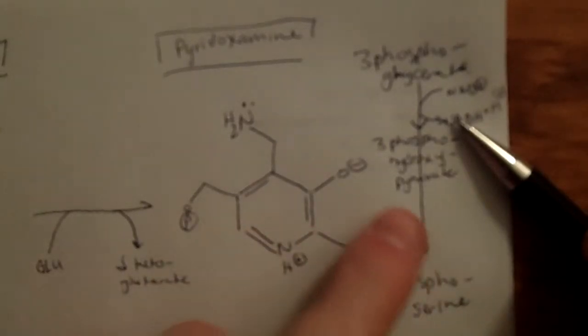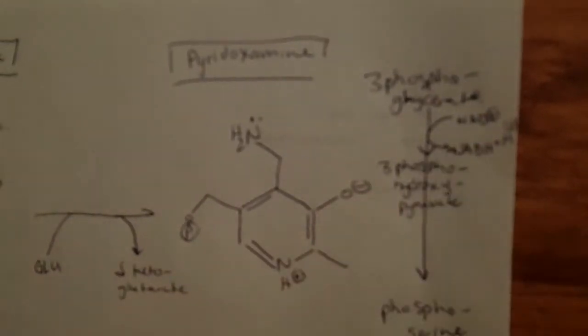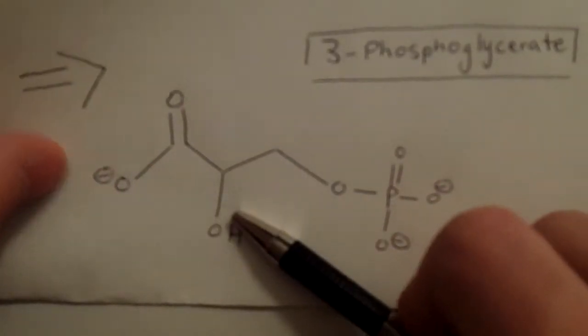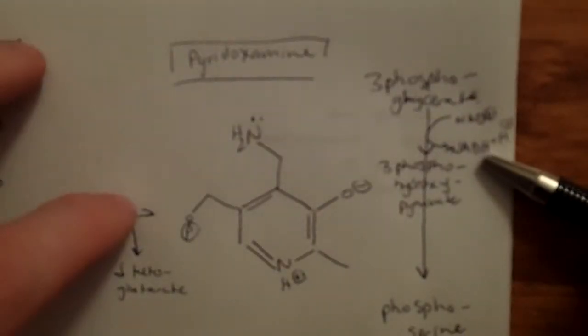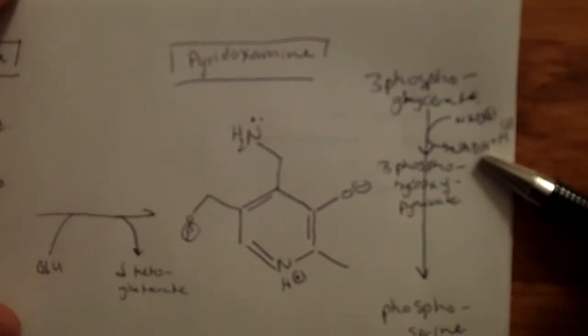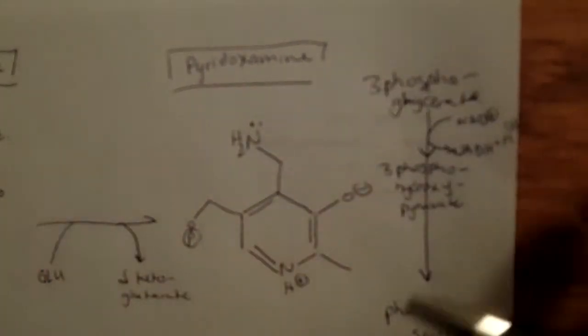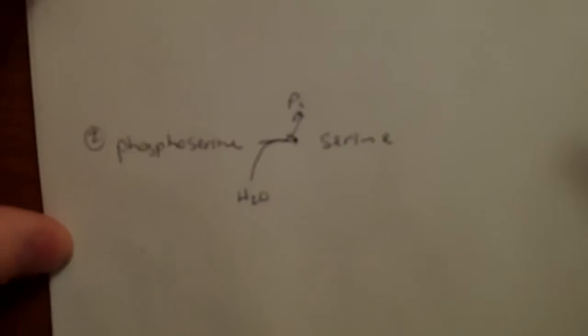Typically pyridoxamine deals with keto acid forms, and 3-phosphoglycerate as you can see is not the keto acid that we want. So the first thing you got to do is you got to oxidize here. That results in an NADH. That's why you start from here for pyridoxamine.